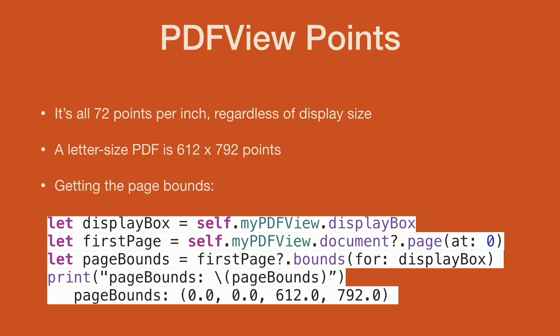If you're dealing with a file the user may have downloaded from the web and you don't know the size, you can query the size. Individual pages can be of different sizes within the same document. You call getDisplayBox on the page, which gives you the display area of the PDF excluding some padding around the sides. You get the first page by saying give me page 0 of the document. For a letter-sized document, it's always going to be 612x792, with 612 across and 792 up from the bottom.